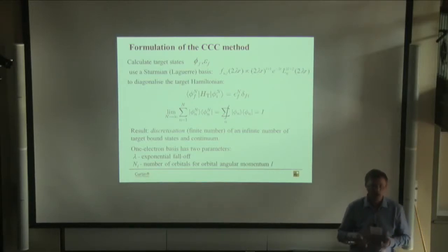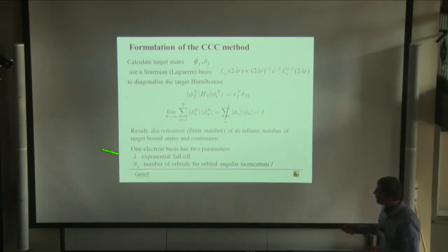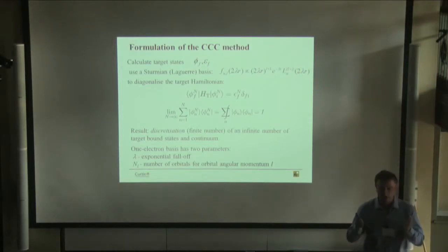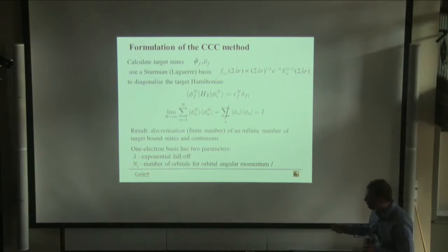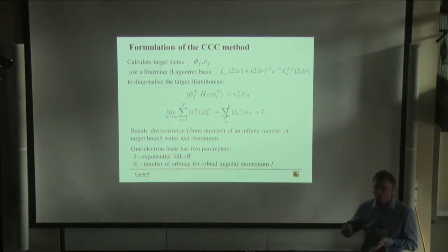For example, if you are interested mostly in the ground state and low-lying excited states, you choose the exponential falloff to describe the extent of those states. If you are also interested in highly excited states, then you have to choose a smaller exponential falloff to represent those states, and hope that the number of Laguerre functions chosen is sufficient to also represent the shorter-range low-lying and ground states.